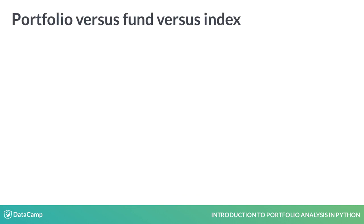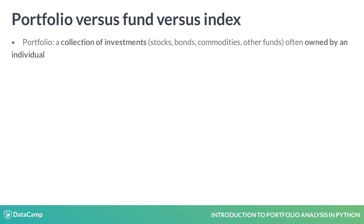But first, let's clarify a bit of terminology. First of all, a portfolio is a collection of assets owned by an individual. Those assets can be stocks, bonds, commodities, funds, etc.